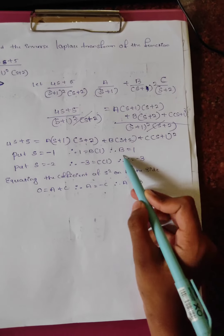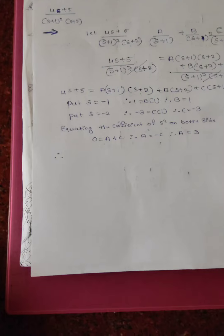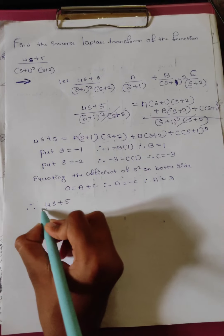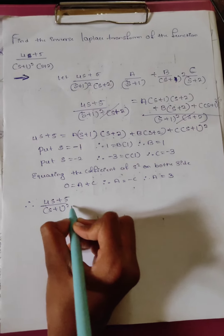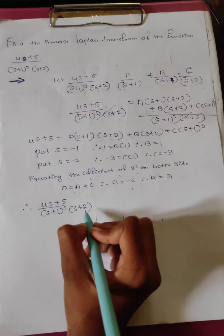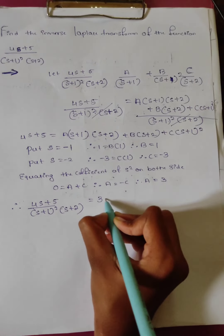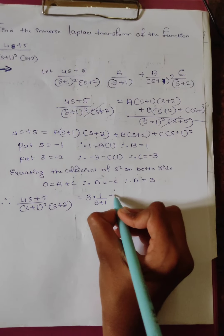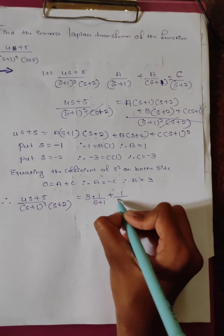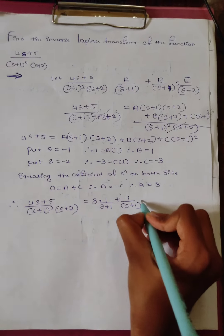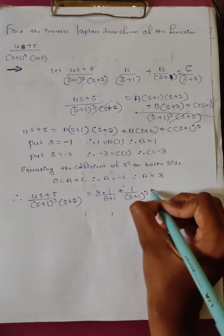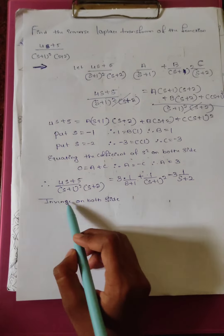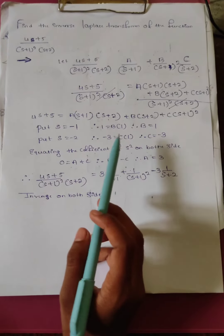A, B, C are found using these equations. Therefore, 4s plus 5 upon (s plus 1) whole square times (s plus 2) equals, substituting values: 3 times 1 divided by (s plus 1), plus B value is 1 times 1 divided by (s plus 1) whole square, plus minus 3 times 1 upon (s plus 2). Now taking inverse Laplace transform on both sides.